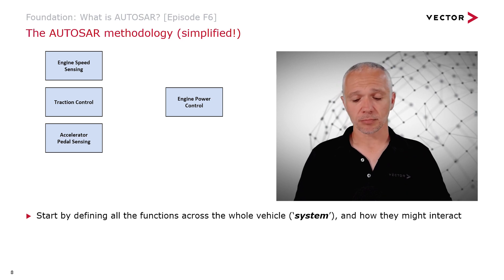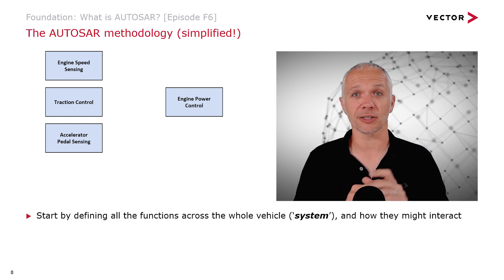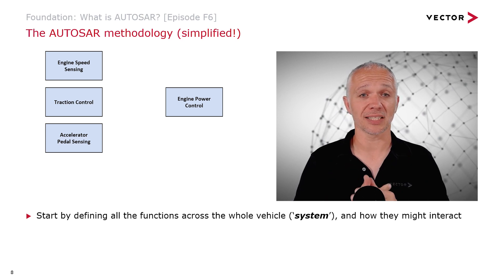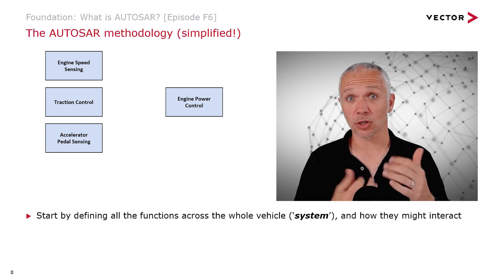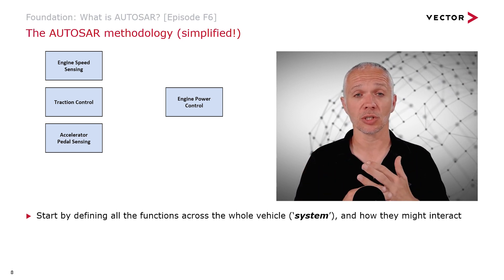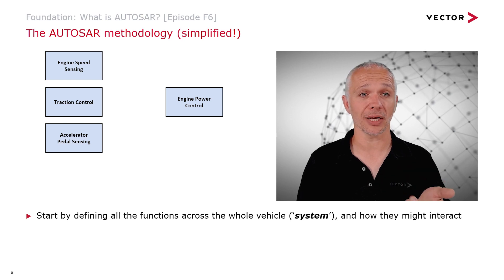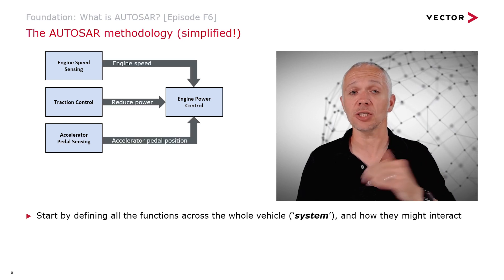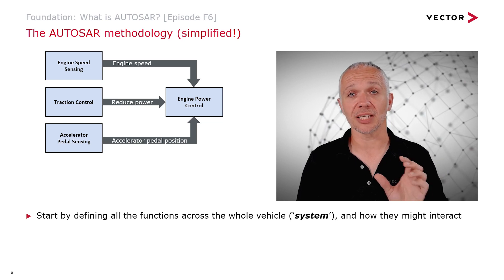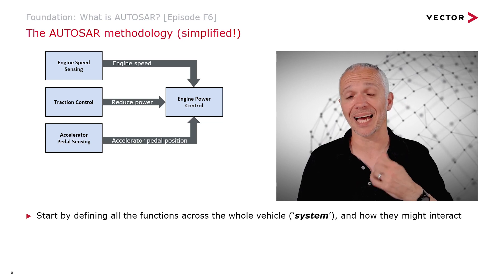Thinking about the methodology — this is really simplified — let's consider a system with only four functions. I have an engine control set of functions: speed sensing, accelerator pedal sensing, and power control itself. I also want traction control, which detects when wheels are spinning and asks the engine power control software to reduce power temporarily. I define all these functions across the whole vehicle and how they interact: engine speed sensing sends engine speed to engine power control as feedback, traction control occasionally sends a reduced power request, and accelerator pedal sensing sends pedal position to engine power control.